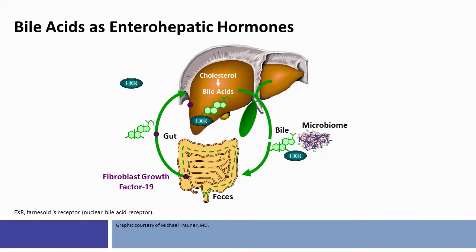Let's start our discussion about this new treatment option by first reviewing the role of the FXR receptor in regulating bile acids. It's important to remember that bile acids are not just detergents that help absorb fat. Cholesterol is the precursor for bile acids, which are converted by biochemical changes in the liver. Bile acids are key in helping us absorb fat and interact with the FXR receptor. Chenodeoxycholic acid has a small amount of agonism for the FXR receptor.